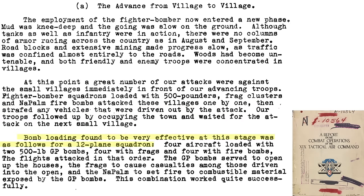The 19th had the sequence of attacks down to a science with 12 attacking aircraft. Four aircraft loaded with 500-pound general purpose demolition bombs, four with fragmentation clusters, and four with incendiaries attacked the village in that order. The GP bombs to damage and expose the houses, fragmentations to wound or kill those fleeing from the village, and napalm to set fire to what was remaining.